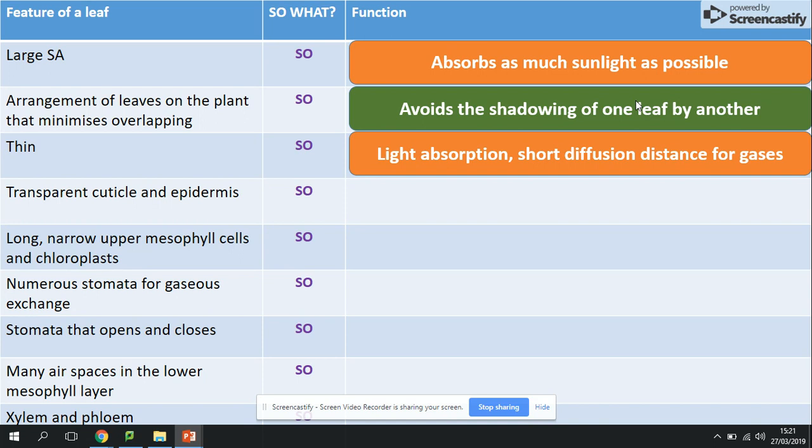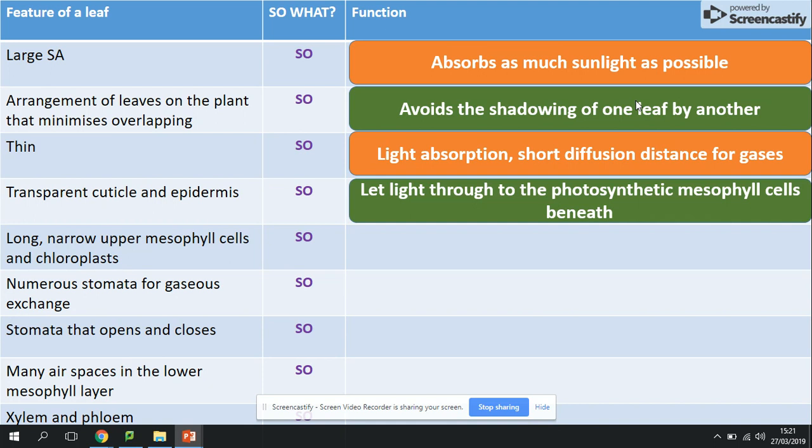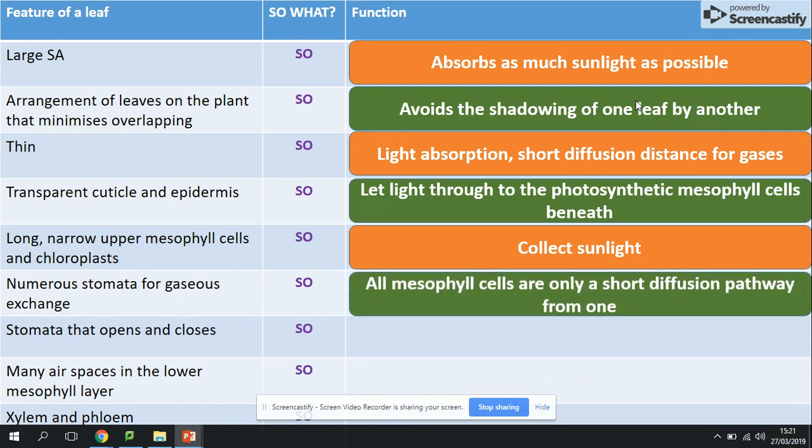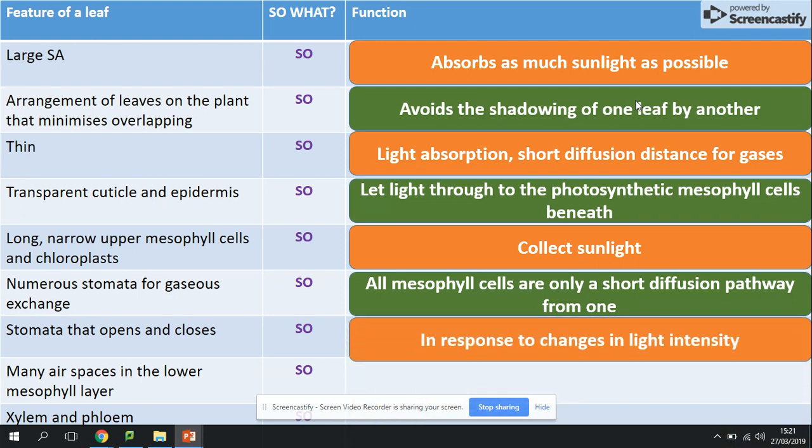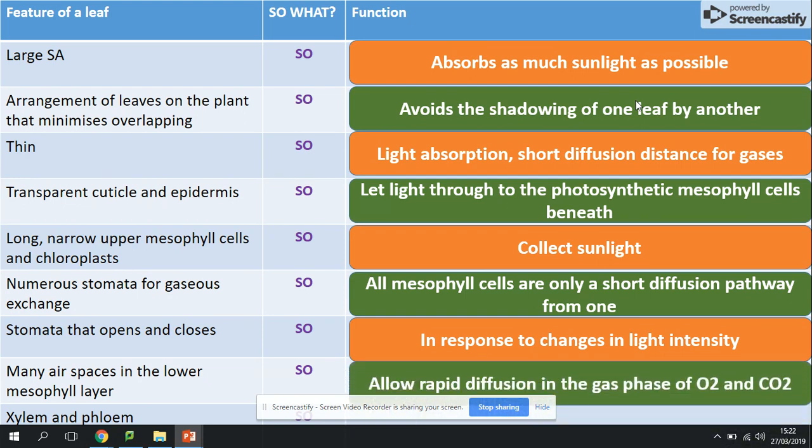Transparent cuticle and epidermis? So let light through the photosynthetic mesophyll cells. Long, narrow upper mesophyll cells and chloroplasts? So they can collect sunlight. Many stomata? For gas exchange, so again a short diffusion pathway. Stomata that opens and closes? This is taking place in response to changes in light intensity. Remember, in the daytime I'm going to have more sunlight, so the rate of photosynthesis will be higher than the rate of respiration. Hence, we will need to open stomata to get in more carbon dioxide for photosynthesis. Many air spaces? Rapid diffusion pathway. Xylem and phloem? That's nothing else than the transport of water and carrying away the sugars.